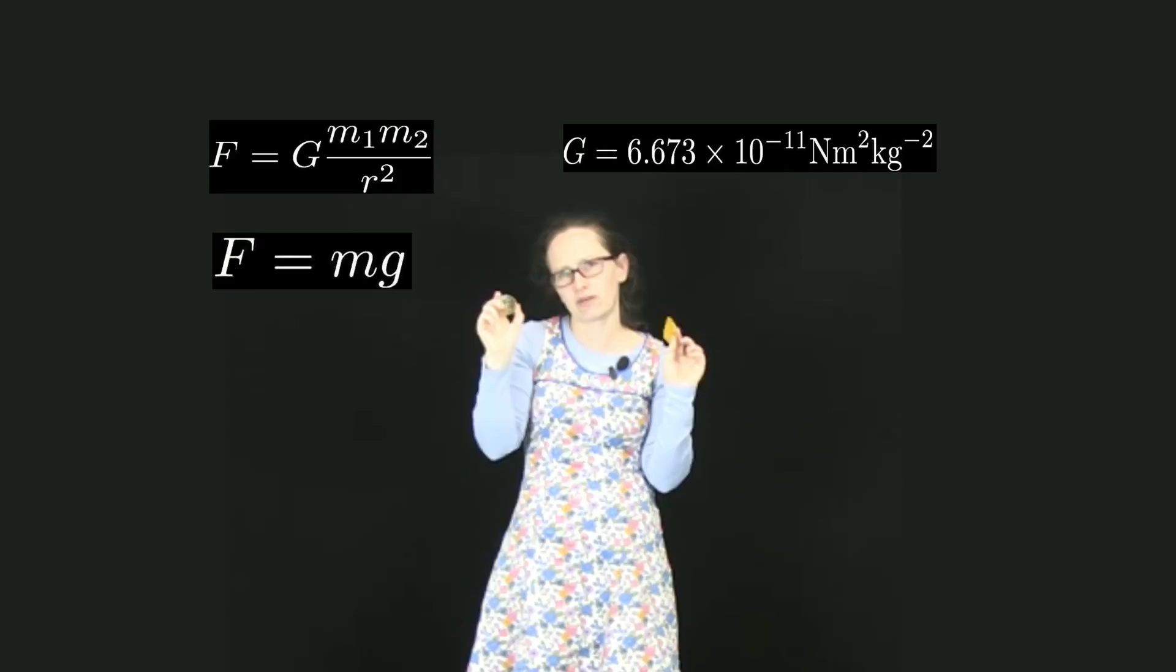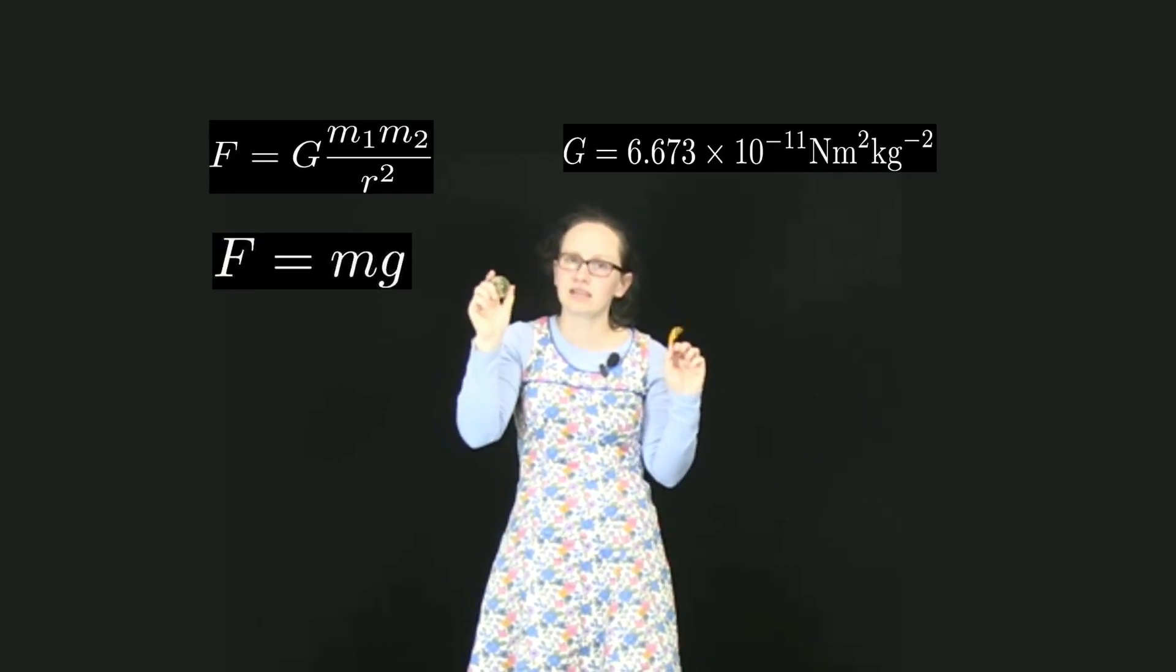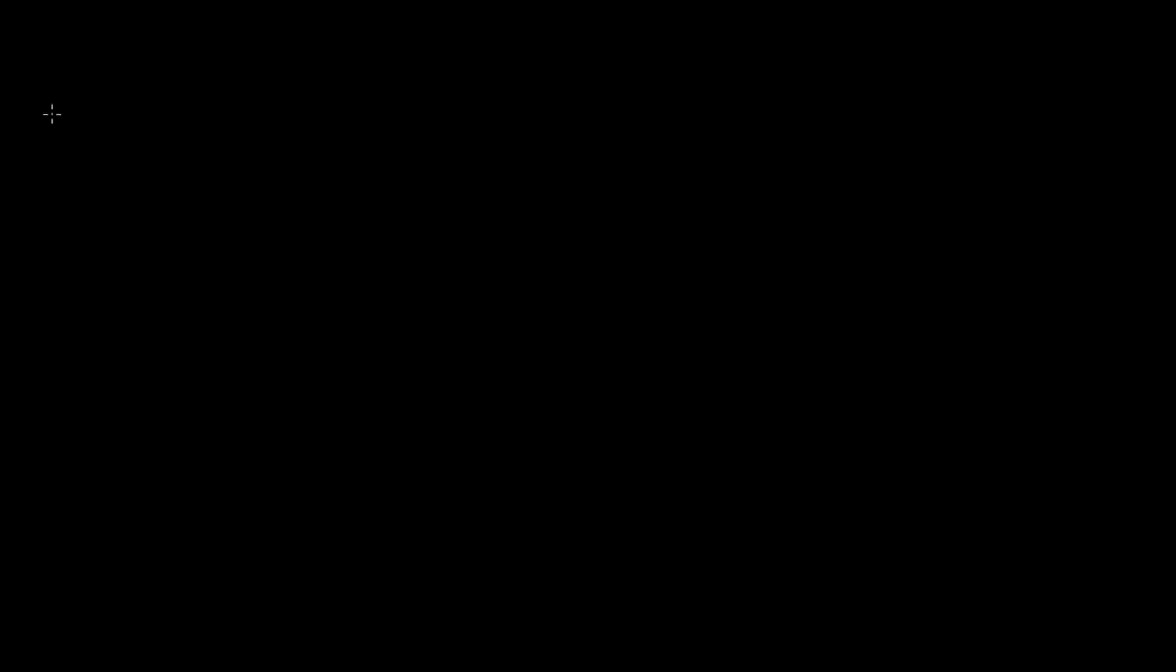The acceleration of objects on the surface of the Earth is given the symbol little g. So we know that F is equal to mg describes the force felt by an object dropped on the surface of the Earth. And F is equal to G m1 m2 over the distance between them squared is the force felt due to gravitation of any two objects which are attracting each other.